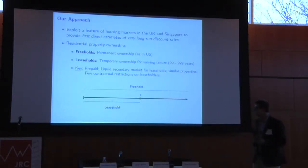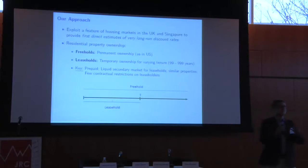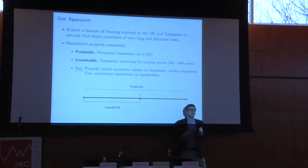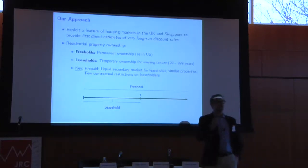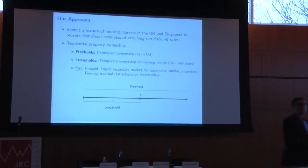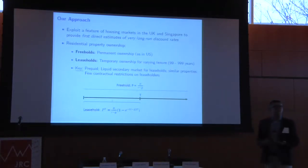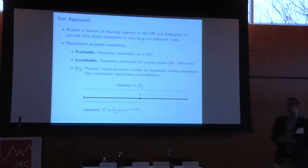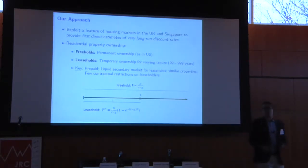The way we think about freeholds and leaseholds in this project is as follows. The freehold is the price you pay for an infinite flow of rents or dividends from the property. The leasehold is the price you pay for only the first 100, 200, or 300 years of that dividend stream. In the most basic valuation model — deterministic, with dividends growing at rate G and an average rate of return R — the freehold is priced as D over R minus G, the standard Gordon growth model formula used for pricing equities.